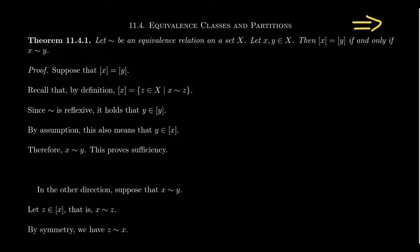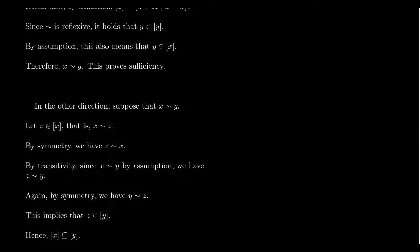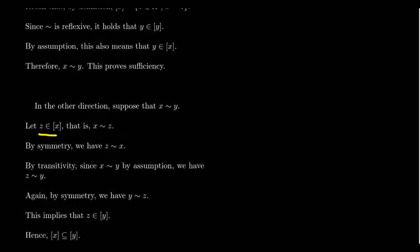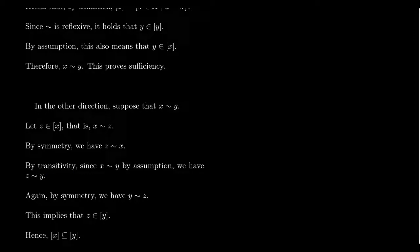Now we go the other direction: assume X is related to Y and argue that the equivalence class of X equals the equivalence class of Y. This is set equality, so we show subset containment in both directions. Take an arbitrary element Z in the class of X, meaning X is related to Z. By symmetry, Z is related to X. By assumption X is related to Y, so by transitivity Z is related to Y. By symmetry again, Y is related to Z, which means Z is inside the equivalence class of Y.